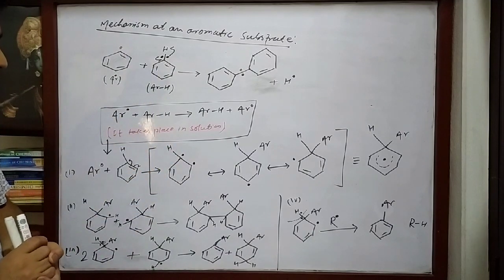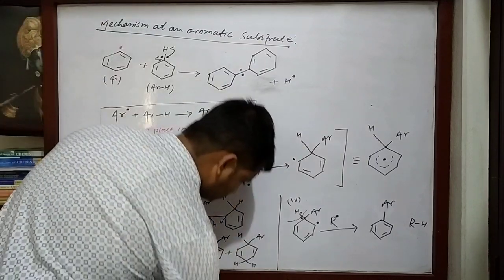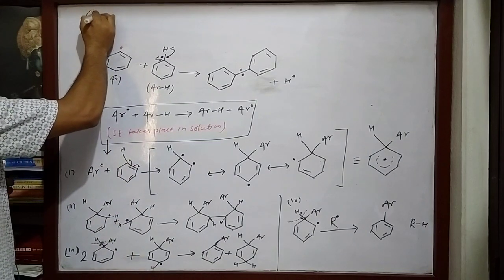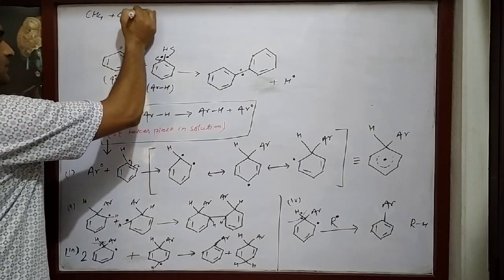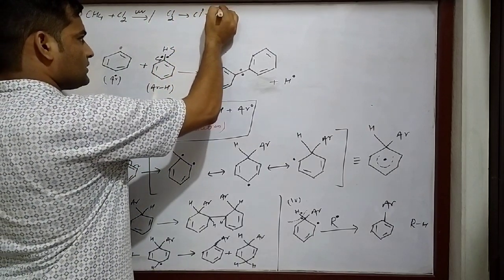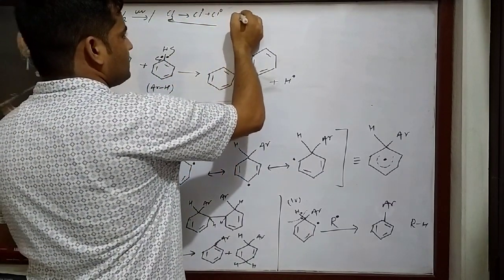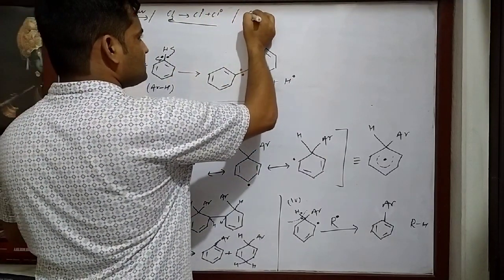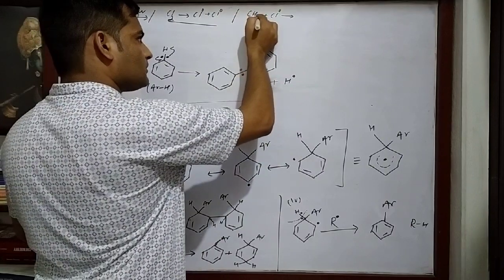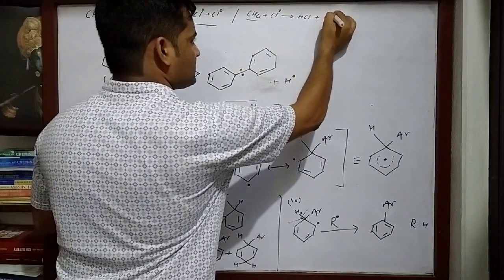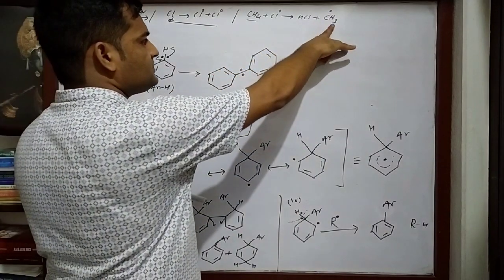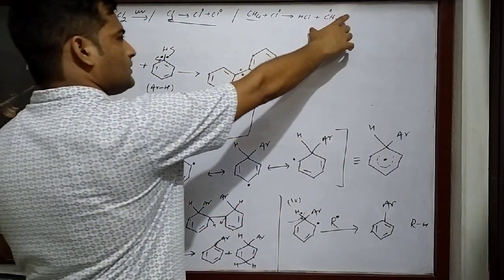In an aliphatic substrate, suppose we take a CH₄ molecule and react it with Cl₂ in the presence of UV light. At first, Cl₂ dissociates to give Cl radical — a chlorine free radical. This is chain initiation. In chain propagation, CH₄ reacts with the Cl radical; the free radical abstracts an H atom from the neutral molecule to give HCl, and CH₄ gives a CH₃ radical.